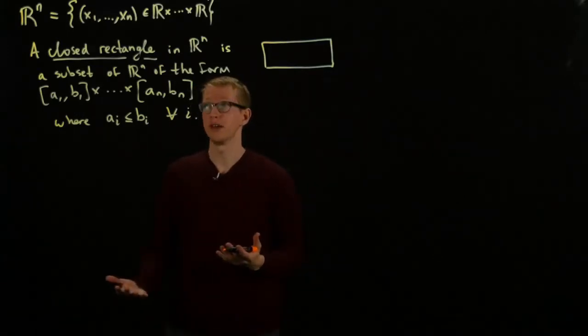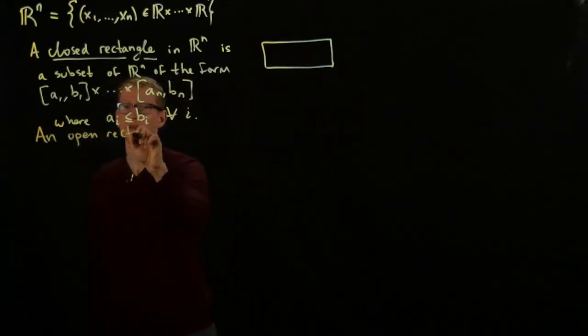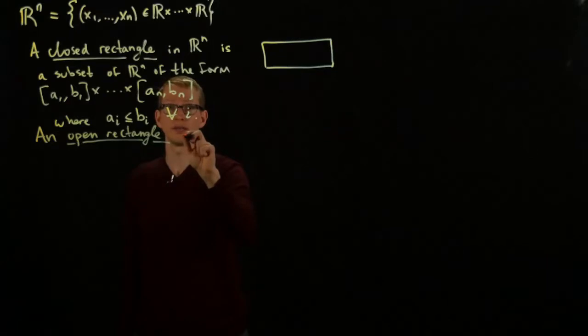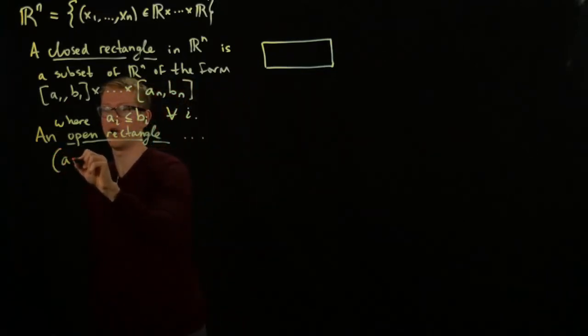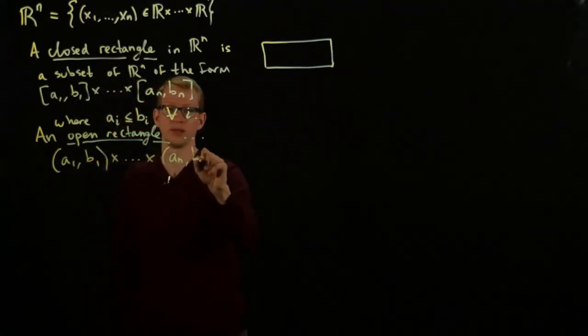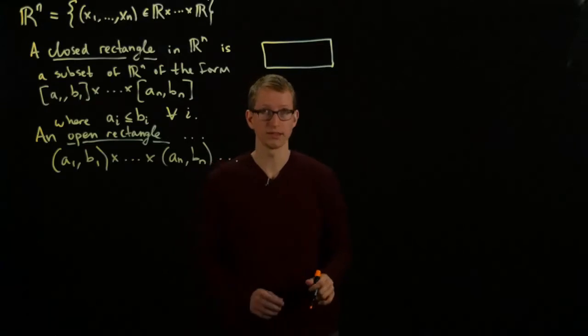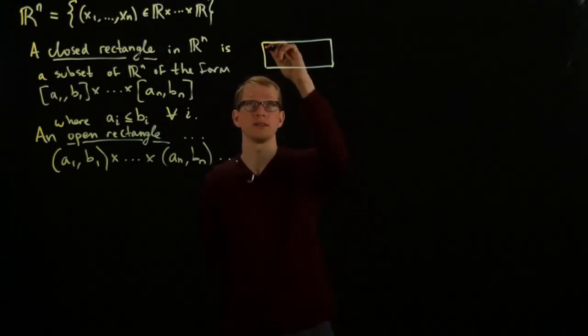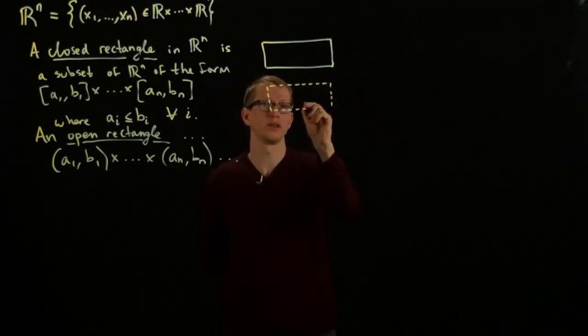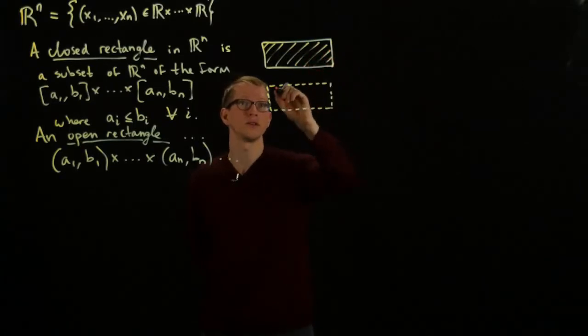Similarly, an open rectangle is one of the form open parentheses (a1,b1) all the way up to (aN,bN), and similar statement. So we often draw something like this by replacing the boxed grid with something that's maybe dotted or dashed, so that we know that we're not including this boundary. And again, these are all filled in.